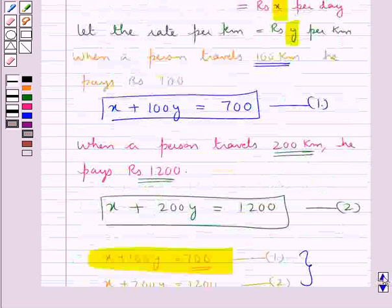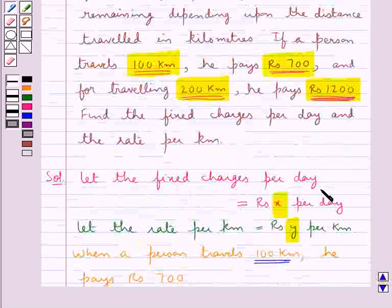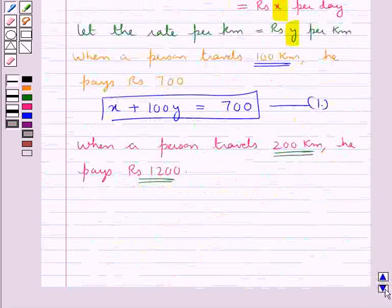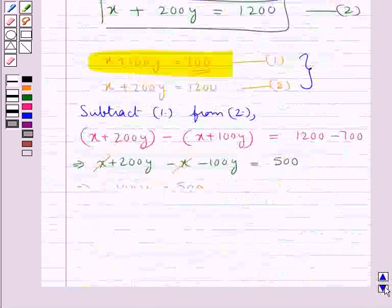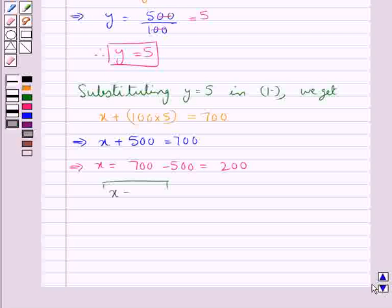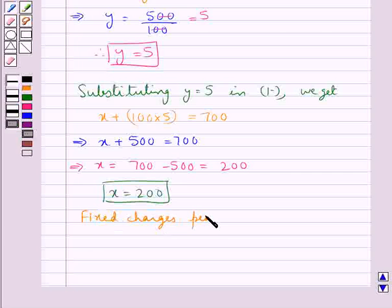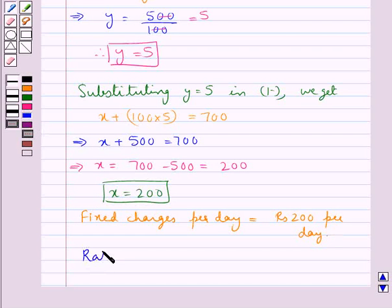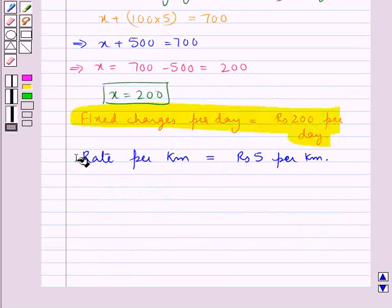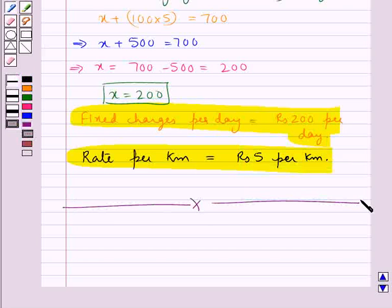We assumed x to be the fixed charges per day and y to be the rate per kilometre. Thus, fixed charges per day is Rs. 200 per day, and the rate per kilometre is Rs. 5 per kilometre. This is our final answer. This completes the session. Hope you have understood the solution for this question.